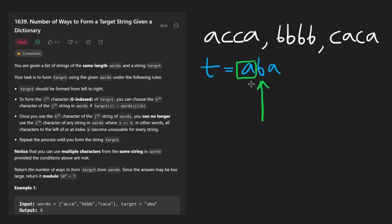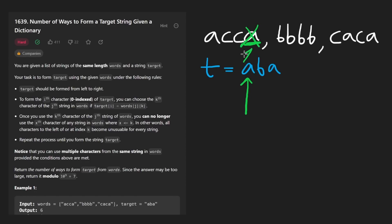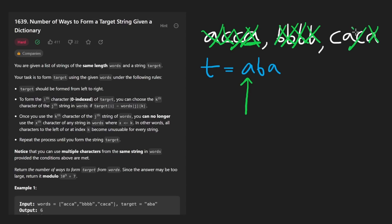Alternatively, we could have not chosen this A. When we were trying to match this A, we could have chosen a different A — this one or maybe even this one. The problem is when we choose one of these characters farther to the right, we cannot only not reuse this character and the same position from the other words, but we also can't use anything to the left of the character that we already used. So we can't use this and anything to the left of it — same with every other word.